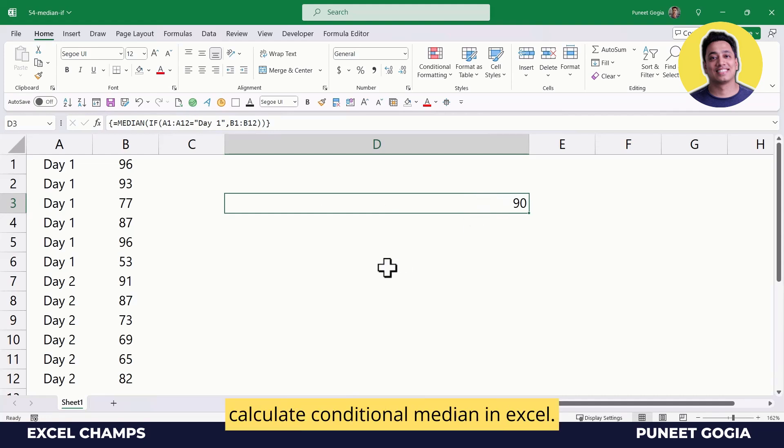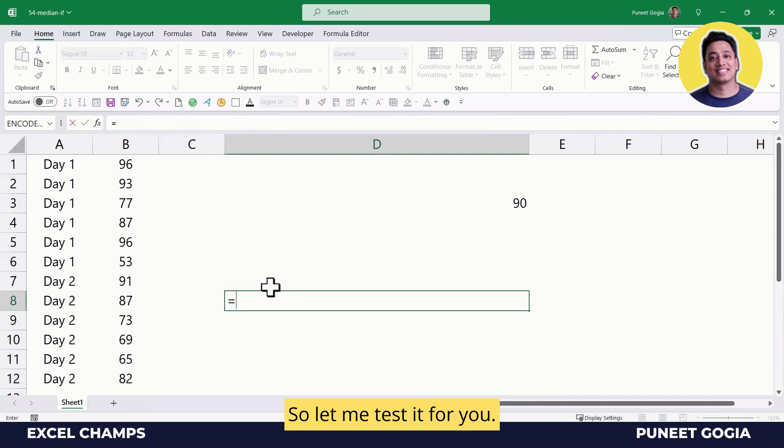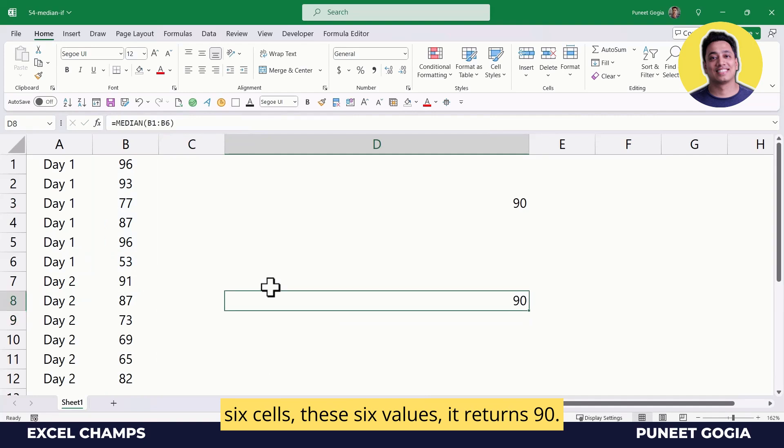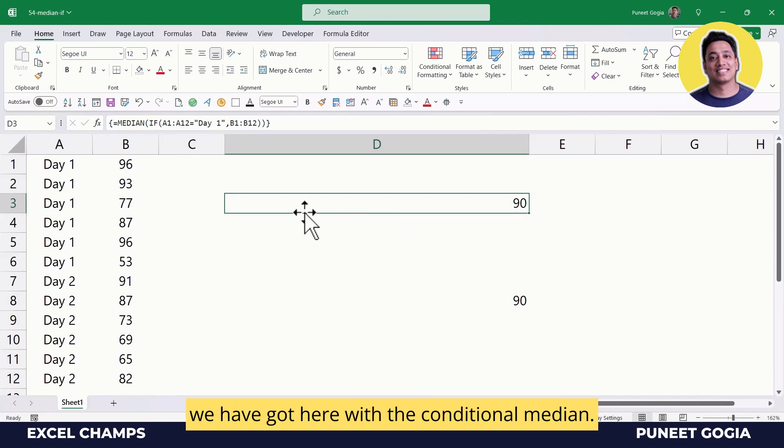Let me test it for you. If I calculate the median for only these six cells, these six values, it returns 90. This is the same exact result that we got with the conditional median formula.